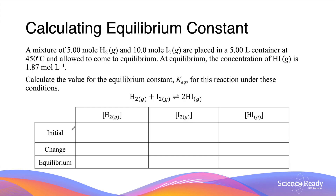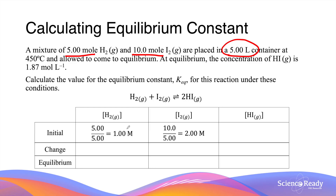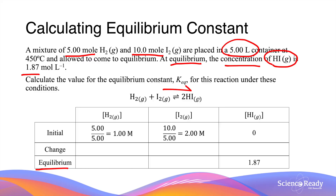We set up the ICE table by dividing the rows into Initial, Change, and Equilibrium concentrations, and the columns into the different chemicals in the reaction. We are given the initial quantities in moles of the two reactants, so we convert moles to concentrations by dividing by the volume (5 litres), giving initial concentrations for H2 and I2. We also place the equilibrium concentration of hydrogen iodide (1.87 mol/L) in the equilibrium row. Since we start with only H2 and I2, the initial concentration of hydrogen iodide is zero.